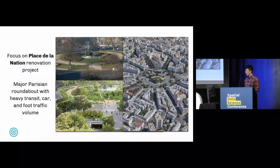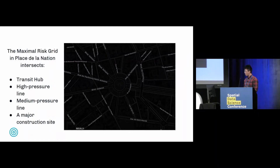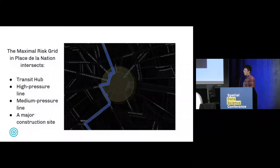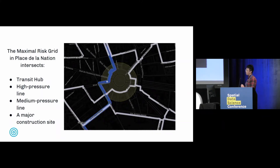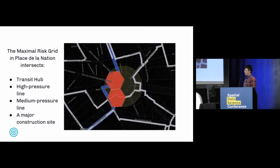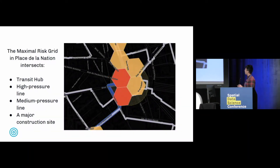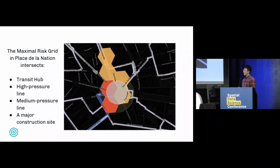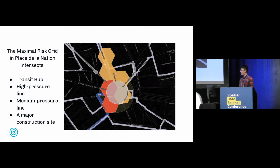Applying our analysis to this location: the Nacion is a major transit hub that also has a high-pressure main and a medium-pressure main underneath it. Applying our grid, our system was able to identify the high-pressure main as having the top 1% of risk, whereas the medium-pressure main has the top 10%. A decision maker can then overlay the extent of the excavation and assign more resources to monitor the higher-risk side of the roundabout. This analysis tool allows city officials and utilities to preemptively identify excavation risk and take measures before anything bad happens.